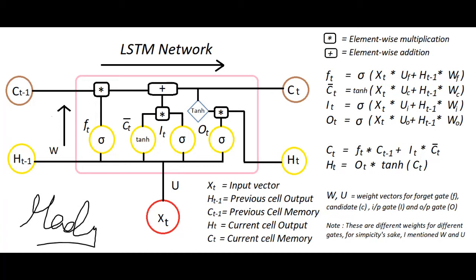A long short-term memory network is a special kind of recurrent neural network which is optimized for learning from and acting upon time-related data which may have undefined or unknown lengths of time between relevant events.